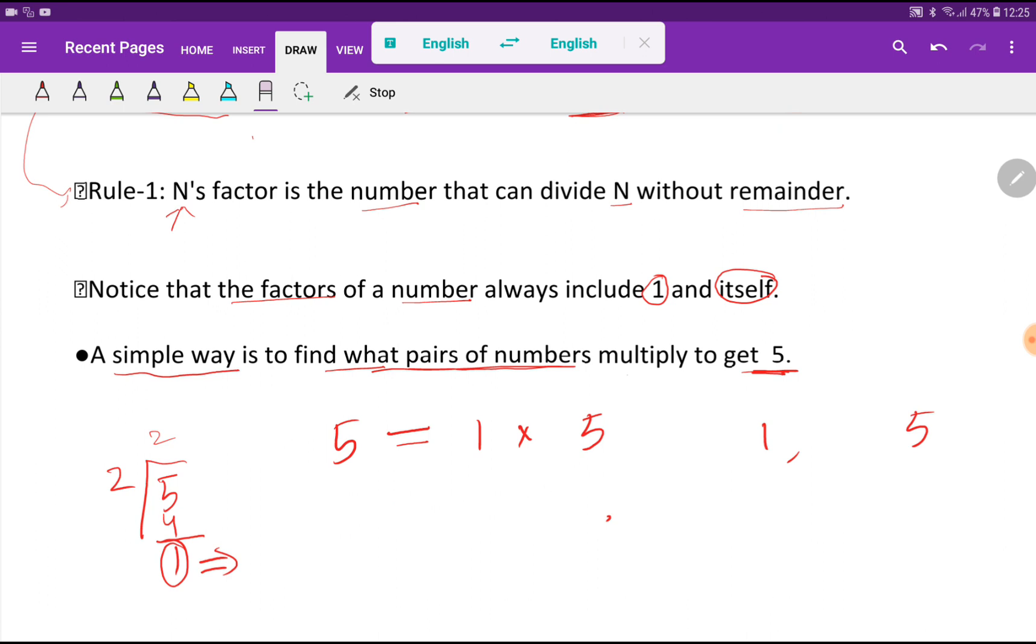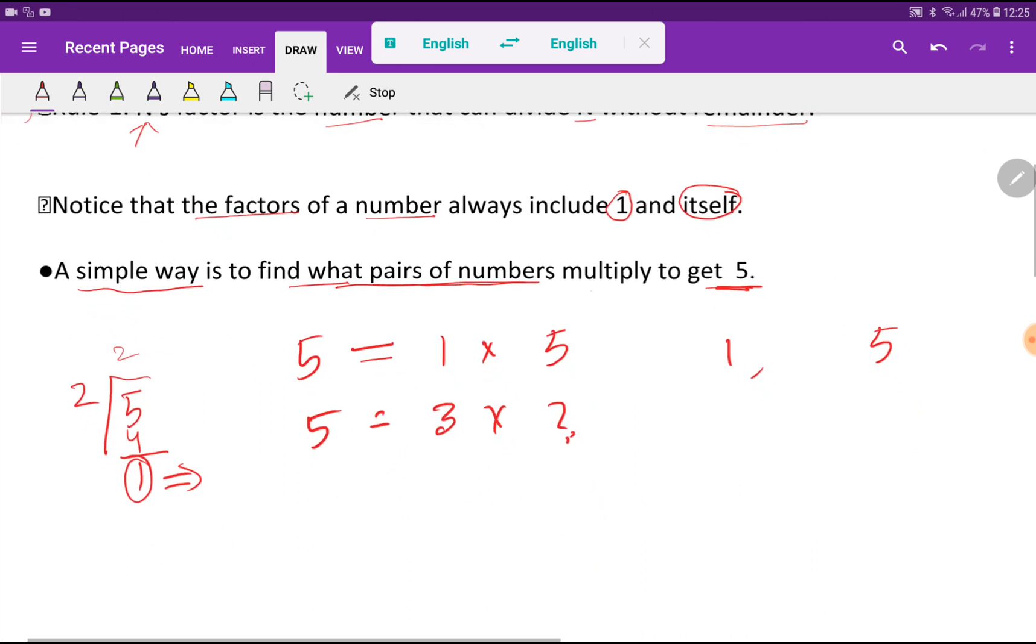Now we will try to find the factors of 5 by 3. So what number will come here? If I divide 5 by 3, you will get remainder 2. That is, 5 is not completely divisible by 3. So 3 is not a factor of 5.